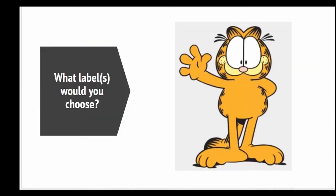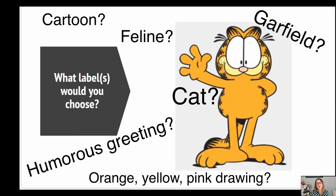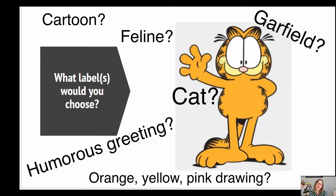So the icebreaker: what labels would you choose for this image if you were trying to either index it or search for it? How would you do that? The reason I start with this is because we often start the conversation with taxonomies with — okay, you have words or you get words from your text or whatever assets you have. How do you structure them? How do you organize them? That's usually what we jump to.